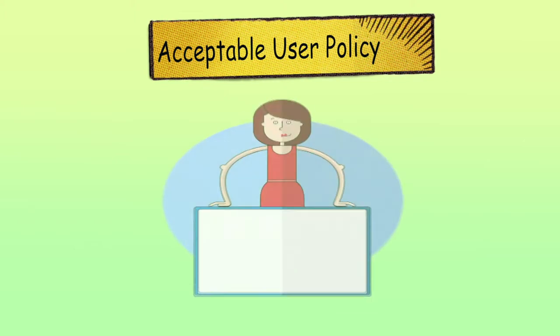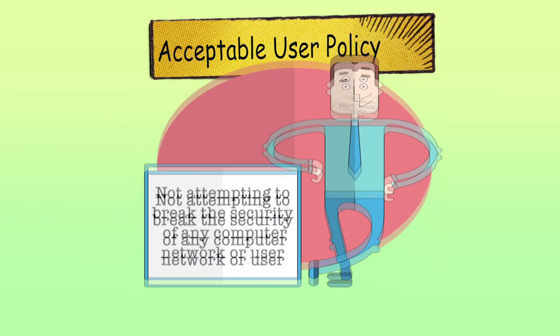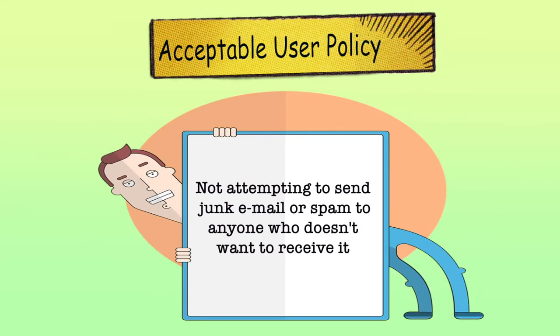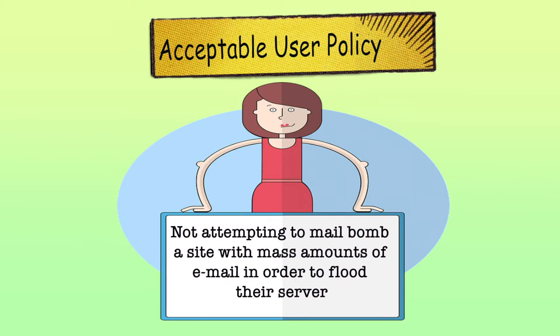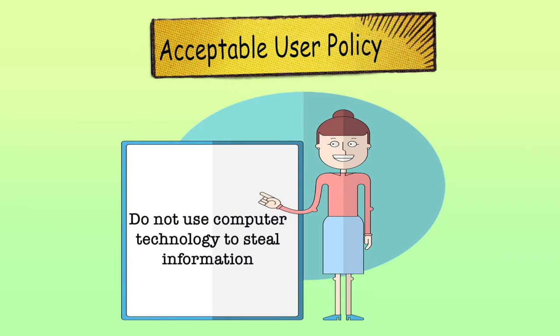In institutions, one should have an acceptable use policy — a policy that describes the use of internet and other information technologies and networks in an institution. The rules in these policies often apply to both staff and students, and everyone including parents need to know and understand these policies. An acceptable use policy may contain: not using the service as part of violating any law; not attempting to break the security of any computer network or user; not posting commercial messages to institutional groups without prior permission; not attempting to send junk emails or spam to anyone who doesn't want to receive it; not attempting to mail bomb a site with mass amounts of email to flood their server; do not use computer technology to cause interference with other users' work; do not use computer technology to steal information.